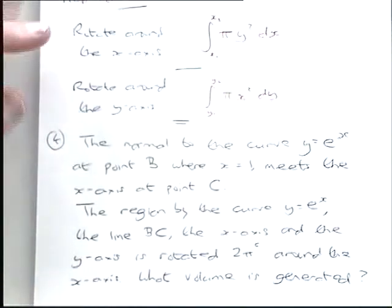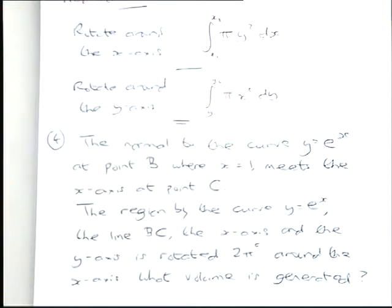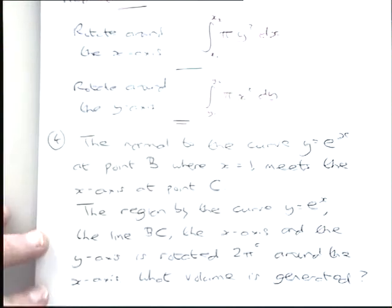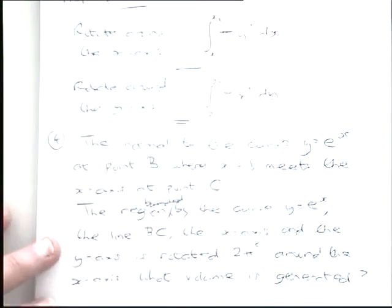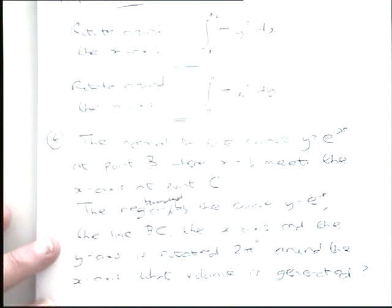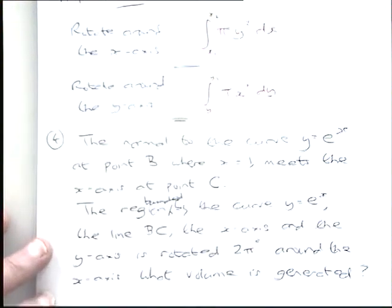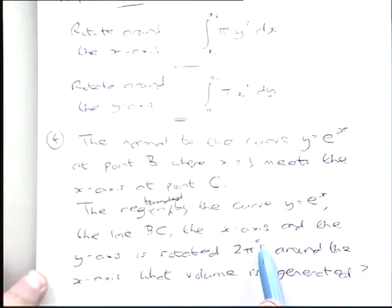We've got the two rules from previously up here for rotating around the x-axis and the y-axis. We've got a question: the normal to the curve y equals e to the x at point B, where x equals 1, meets the x-axis at point C. Two pi radians is a full turn.